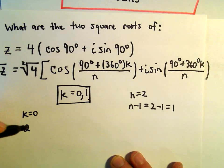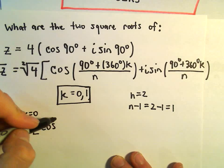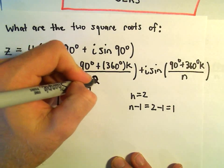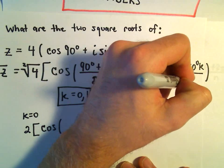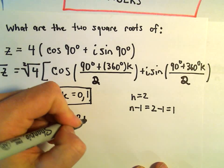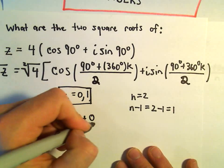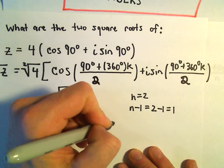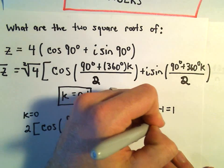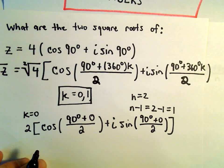For the k equals 0 case: the square root of 4 is just 2. Then we have cosine of 90 degrees plus 360 degrees times 0 over 2, plus i sine of 90 degrees plus 360 degrees times 0 over 2 — which gives us 90 degrees plus 0 over 2. That's going to be one of our complex numbers.